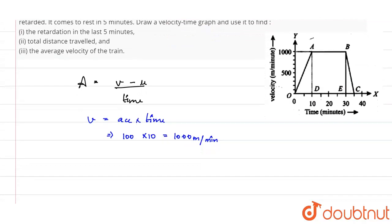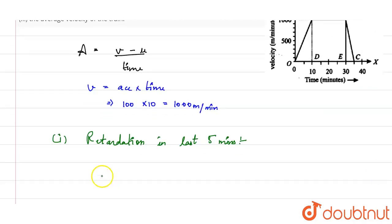Now first of all, we will find the retardation in the last 5 minutes. To find the retardation in the last 5 minutes, we will find the slope of line BC, which equals minus slope of line BC.